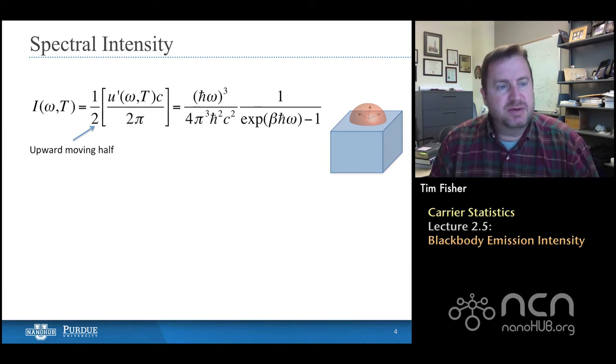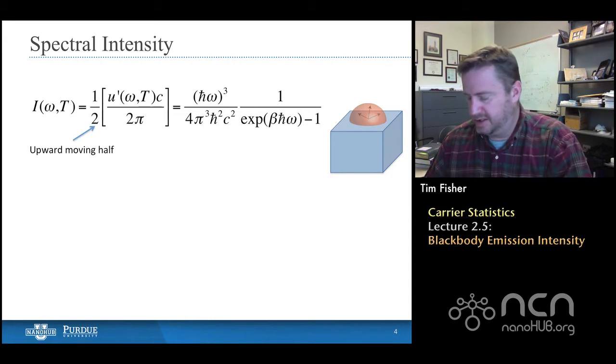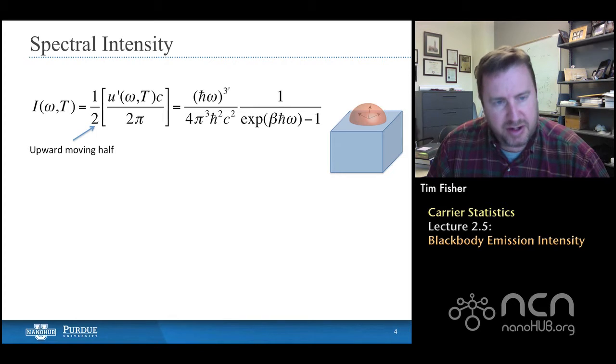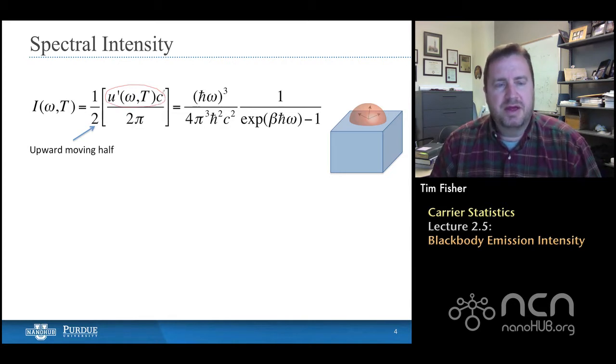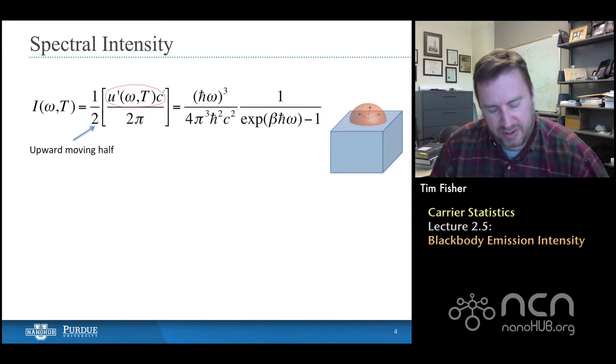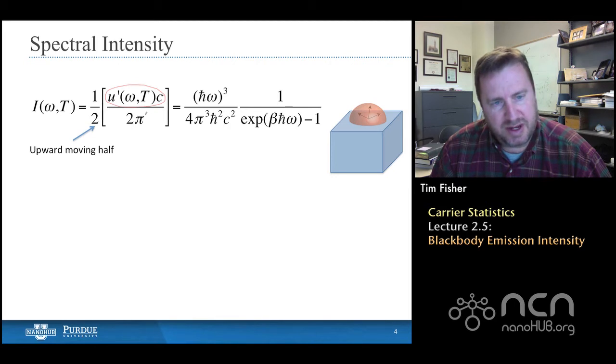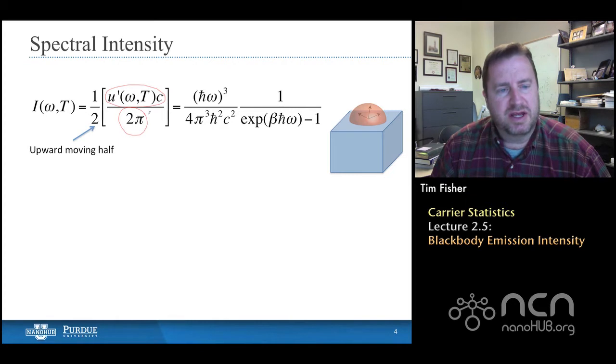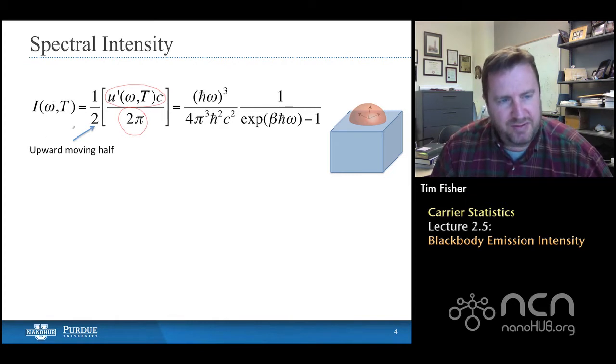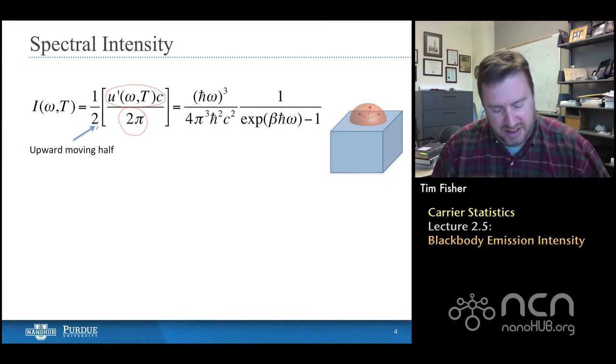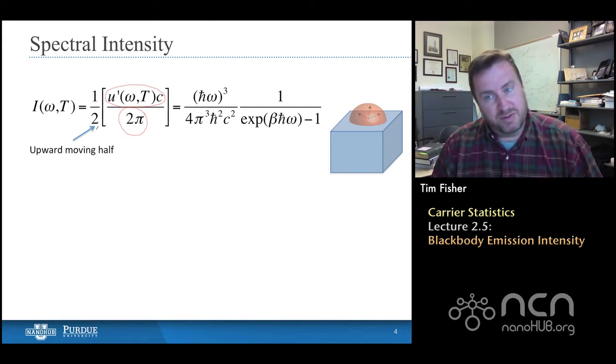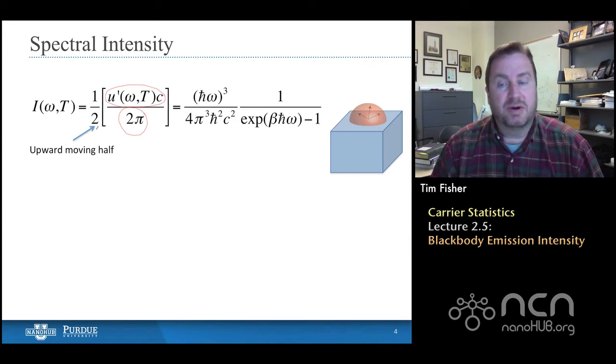So we express this intensity with the variable i. And in this case, we'll look specifically at the frequency, the angular frequency spectrum. We represent this intensity, as I stated before, mathematically as the product of this spectral energy density—that's u prime—and the speed with which the field is moving. And that's simply the speed of light, c. So that's the first product that we form. But as we said before, the intensity by definition is per unit solid angle. And we said that a hemisphere has a solid angle of 2π. So we're going to normalize by that. We're going to assume that it's all distributed in that 2π solid angle. And then the last term here that we have to deal with is the fact that there's a one-half in front. And the reason is that only half of that energy density is actually moving upward. The other half is moving downward. And so we don't count that in this spectral intensity that's coming out of this pinhole.